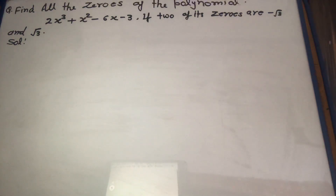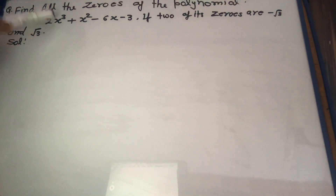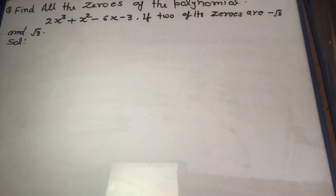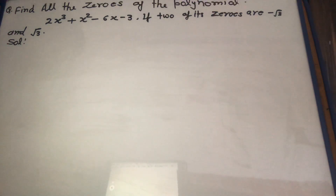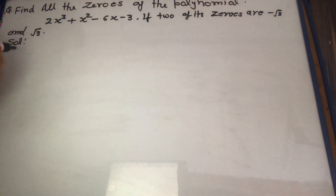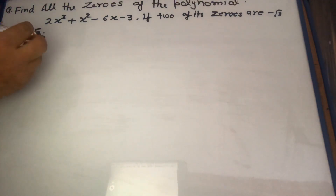First of all, we observe that the polynomial has highest degree 3. Therefore, this polynomial has a maximum of 3 zeros, but two zeros are already given. Therefore, only one zero is remaining, and we will find that one zero. So, two roots of the polynomial are given — let us start the solution.